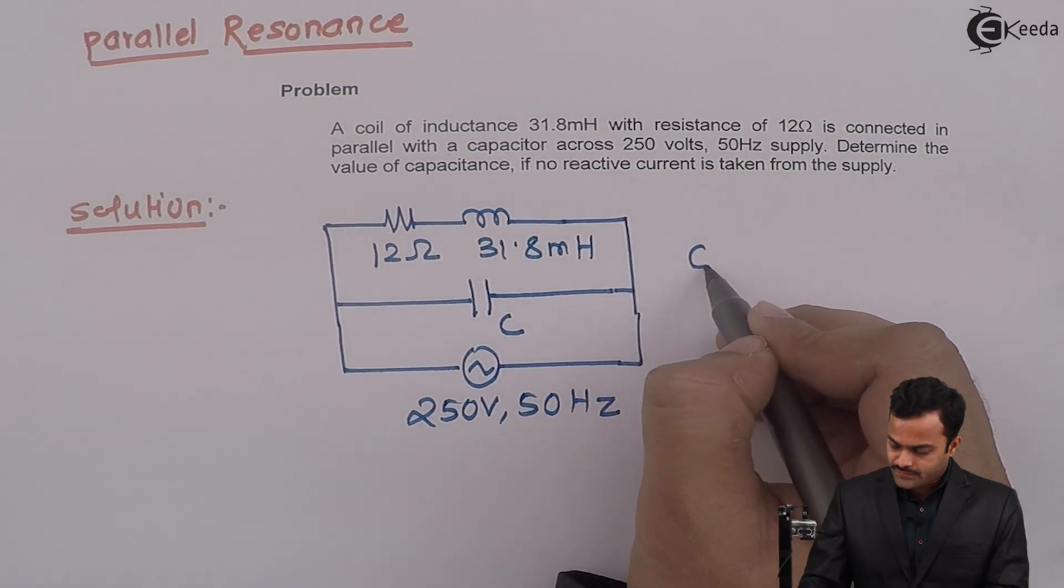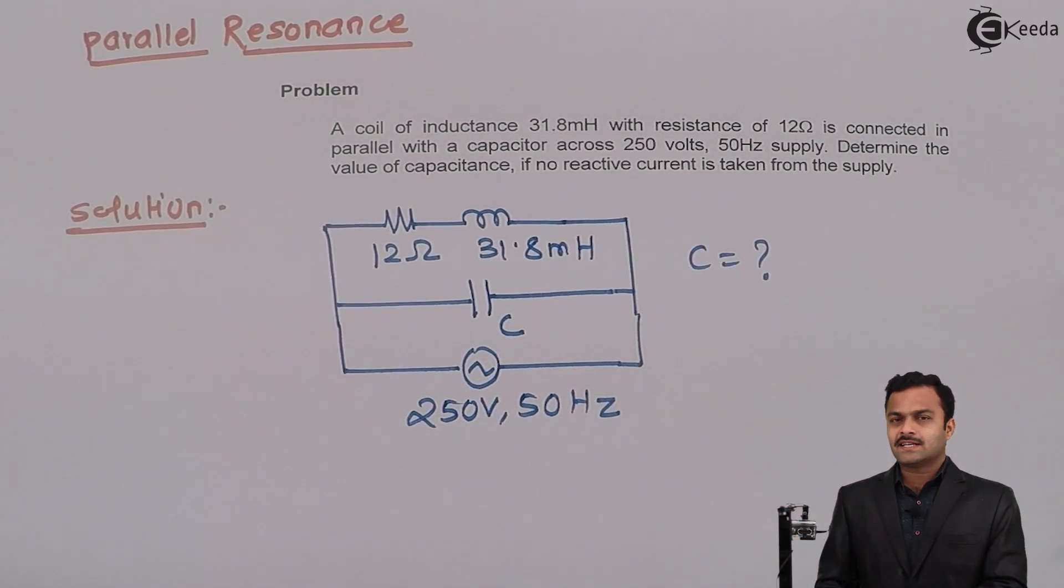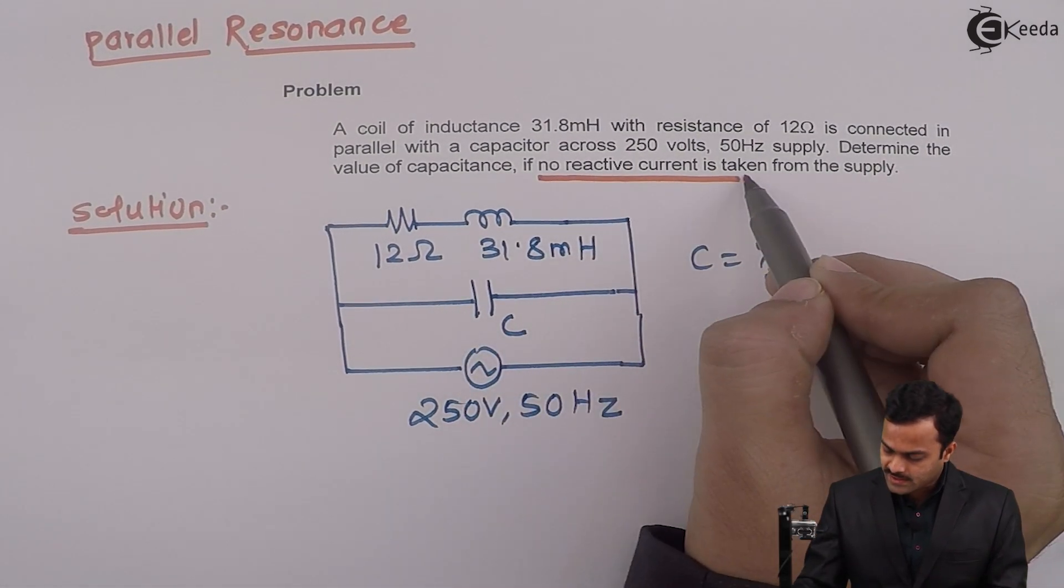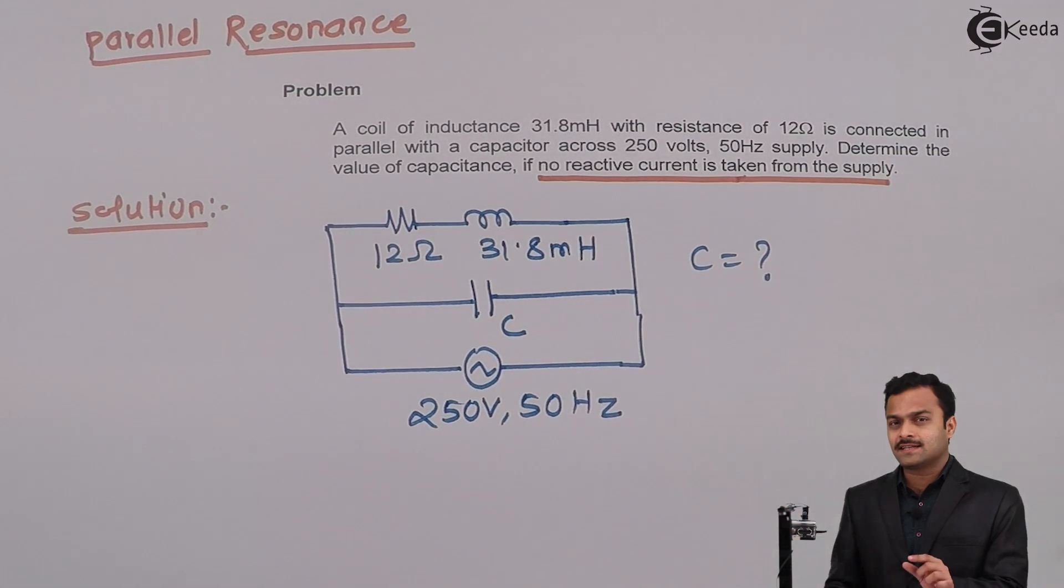Whole circuitry is connected across 250 volt 50 hertz supply. We have to obtain the value of C such a way that no reactive current is taken from the supply. This statement is very important.